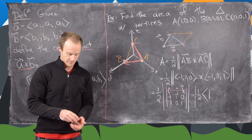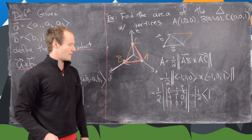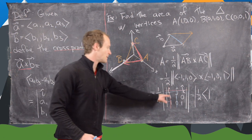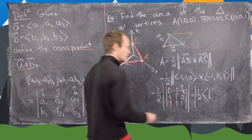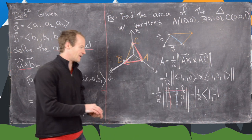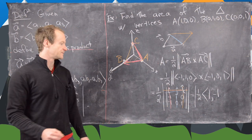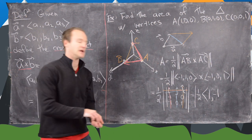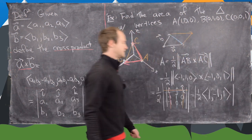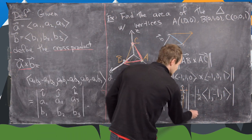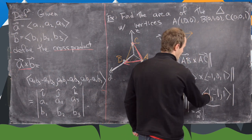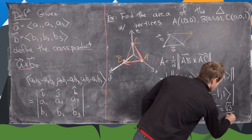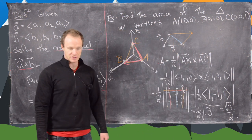Expanding the determinant: in the i direction, crossing out the first row and column gives 1×1 minus 0×0 = 1. For j, we get negative one times one minus zero times negative one, giving -1, but with the built-in minus sign the j component is -1. For k, the determinant is negative one times zero minus one times negative one = 1. So the cross product is (1, -1, 1). The area is one half times the square root of 1² + 1² + 1² = one half times the square root of 3, which is √3/2.